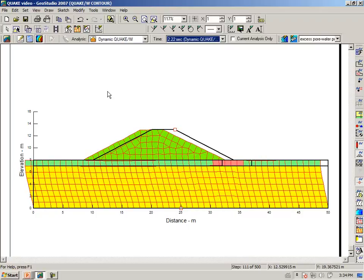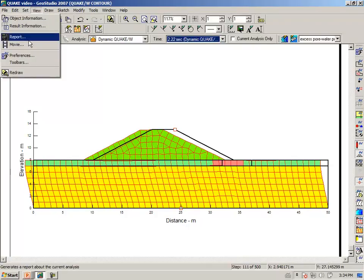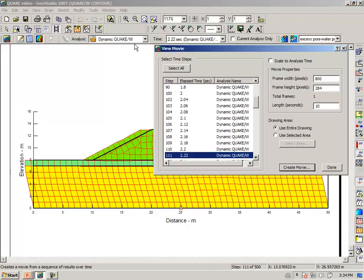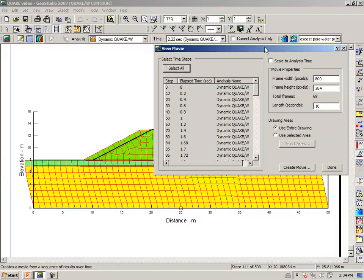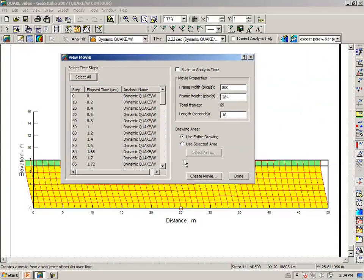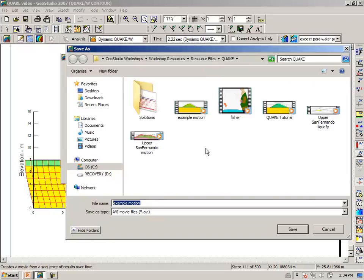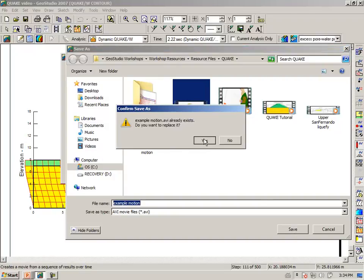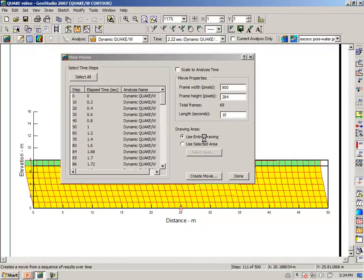Another way to do this is to make a movie. We can say view a movie, select all the times, and then create a movie of the entire drawing. Let's call this the example motion, and we can save the movie. I had already done this, now I'm replacing it just to repeat the process.